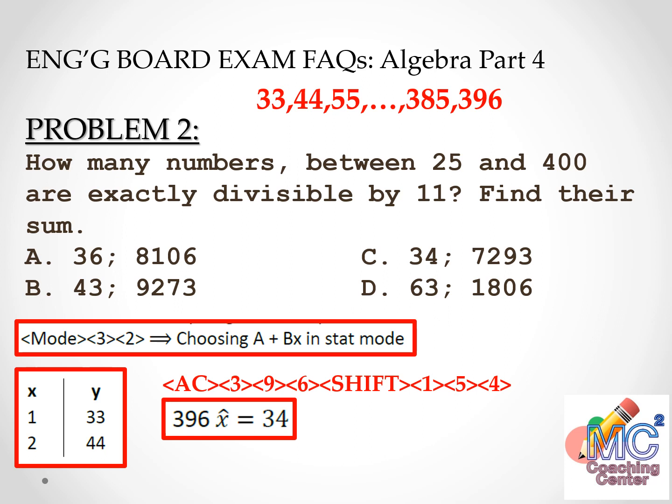In the actual board exam, there is no need to solve the sum since 34 appears uniquely in the choices. It would be a waste of time to compute the sum when the number of terms already identifies the answer. Always remember: in the actual board exam, we need to be fast — not necessarily solving everything that is asked.